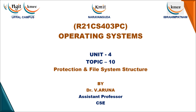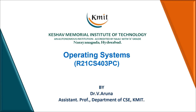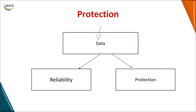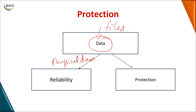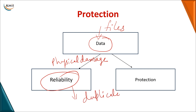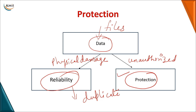Our next topic in operating systems is related to protection and file system structure. Data is stored in files, and we want this data to be protected. One threat is physical damage, which can cause data loss — for that we use a reliability option, which means maintaining duplicate copies of the data. The other threat is unauthorized access, and for that we use a technique known as protection.